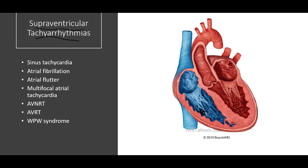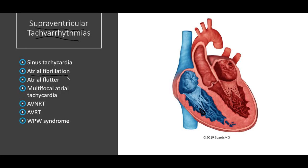Examples of supraventricular tachycardias include sinus tachycardia, atrial fibrillation, atrial flutter, multifocal atrial tachycardia, AVNRT, AVRT, and Wolff-Parkinson-White syndrome. However, for the purposes of this module, we're going to focus on atrial fibrillation.